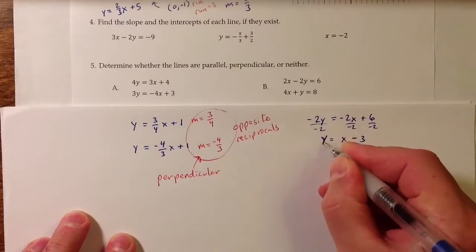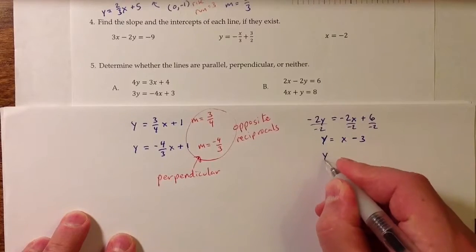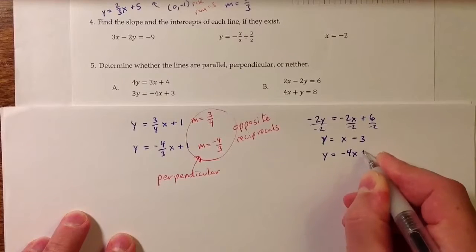For the other line, it's actually a little bit simpler since y is all by itself. That's the same as y equals negative 4x plus 8.